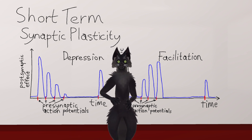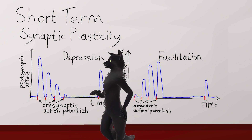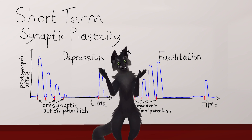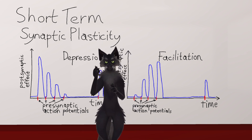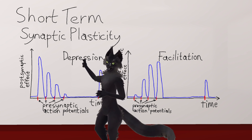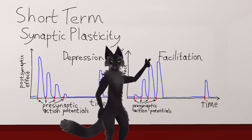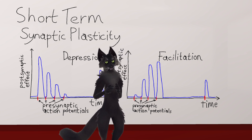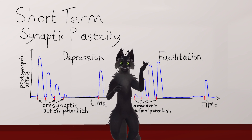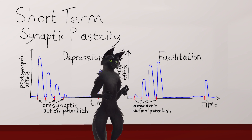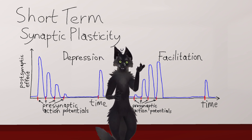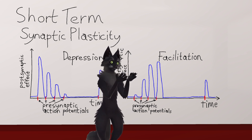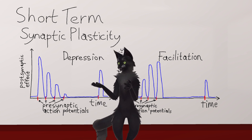Today we're going to discuss a phenomenon known as short-term synaptic plasticity. There are two types of short-term synaptic plasticity, known as synaptic depression and synaptic facilitation. Both of these two effects happen inside of almost all of the synapses in the brain, and they control how strong the synapse is — that is, how much the synapse affects the downstream neuron.